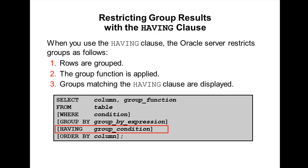The HAVING clause can precede the GROUP BY clause, but it is recommended that you place the GROUP BY clause first, because that is more logical. Group by groups are formed and group functions are calculated before the HAVING clause is applied to the groups in the select list.